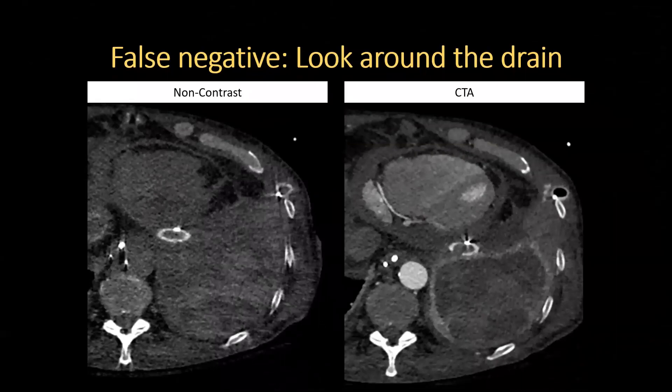Iatrogenic bleeds are quite common, so I pay attention to the course or tract of a recently placed line or tube. This was a 66-year-old man with hyperattenuating left pleural fluid noted on recent chest CT following chest tube placement. No bleed was identified initially. On closer inspection, however, a focus of extravasated contrast is seen along the course of the chest tube as it crosses the intercostal space, likely due to an intercostal artery injury.